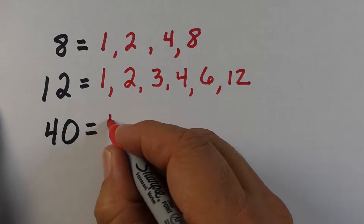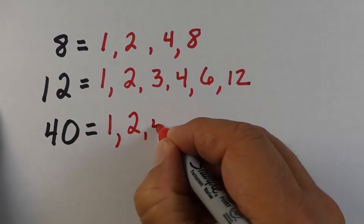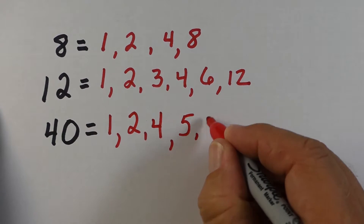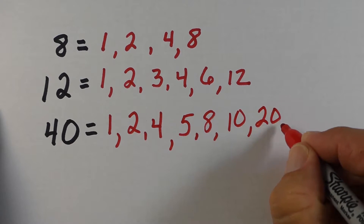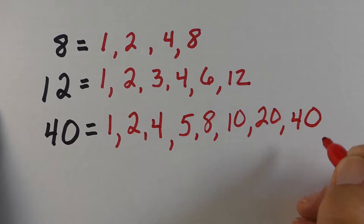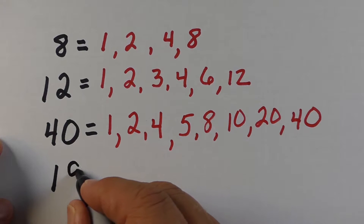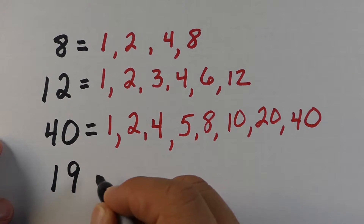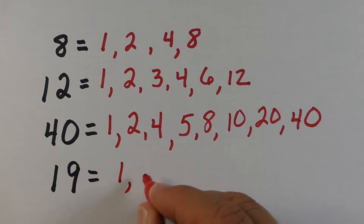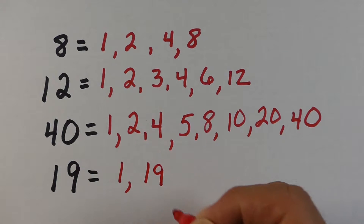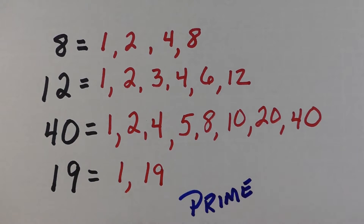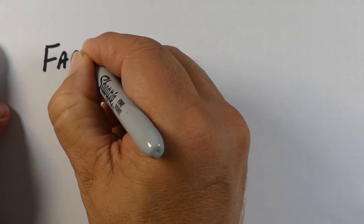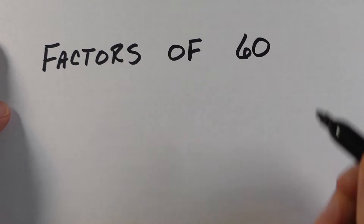If we look at the number forty, we have a few more factors: one, two, four, five, eight, ten, twenty, and forty. All those numbers multiply together to get forty — like one times forty, two times twenty, and so on. For the number nineteen, this one is kind of unique. The only factors of nineteen are one and nineteen. These are called prime numbers — numbers where only one and the number itself are the factors.